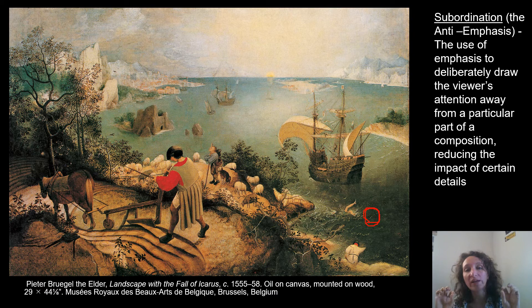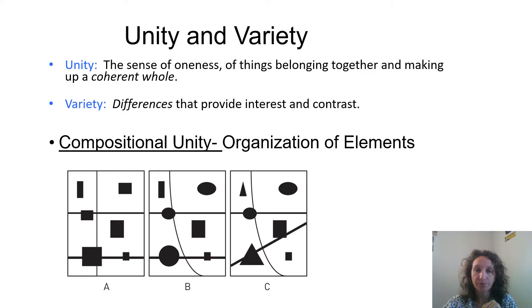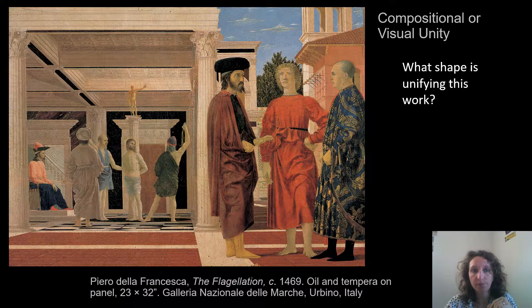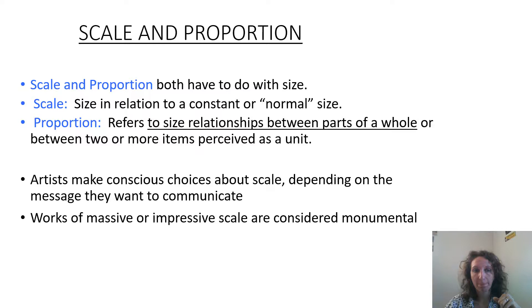Subordination is almost always very intentional by the artist. Usually the focal point, the emphasis, whether it's balanced or subordination — it's usually intentional and communicating something with you. Next: unity and variety. These are complementary ideas and should be familiar terms to you. So what shape is unifying this work of art? It's squares — cubes. You see them over and over again in different places throughout the composition.